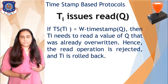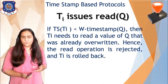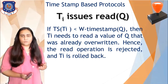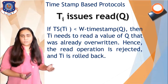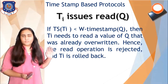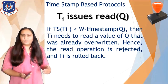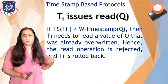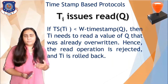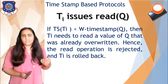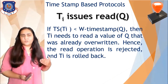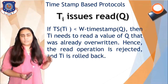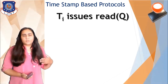If the timestamp of Ti is less than the W-timestamp of Q, then Ti needs to read a value of Q that was already overwritten. Hence the read operation is rejected and Ti is rolled back. Some other transaction has already overwritten the value of Q, and we don't want Ti to read that old value. Rollback means taking the transaction back to the beginning and starting again.